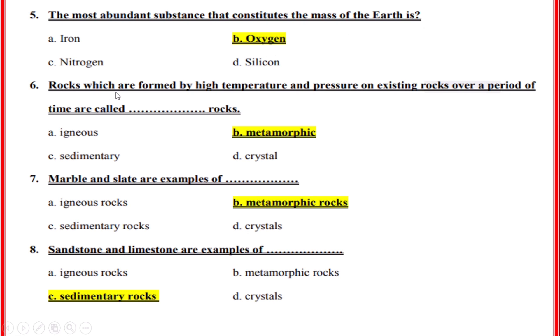Rocks which are formed by high temperature and pressure on existing rocks over a period of time are called? Correct option: B, Metamorphic rocks. Marble and salt are examples of metamorphic rocks. Sandstone and limestone are examples of sedimentary rocks.